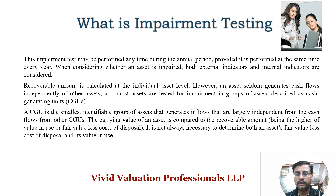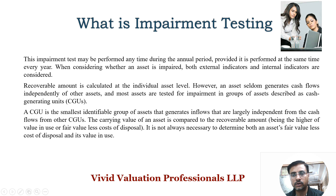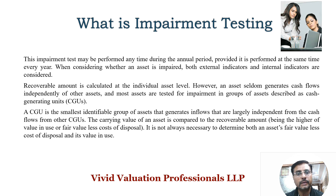The carrying value of an asset is compared to its recoverable amount. For example, suppose your carrying value is 100 crore, but the recoverable value — calculated as the higher of value in use or fair value less cost of disposal — is 90 crore. In this case, it is a case of asset impairment and you need to recognize the impairment loss through the P&L account.